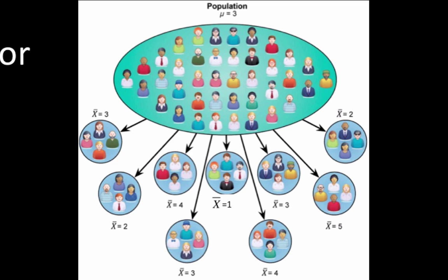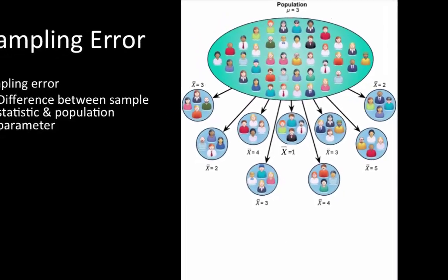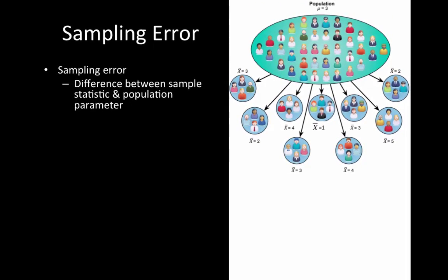The difference between our population parameter (in this case, 3) and our sample statistics—we have 3, 2, 4, 3, 1, 4, 3, 5, and 2—this difference between the sample statistic and population parameter is our sampling error. The difference between our sample and population is our sampling error.